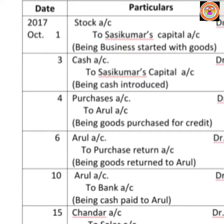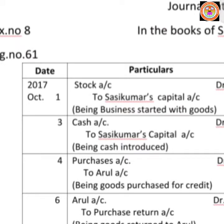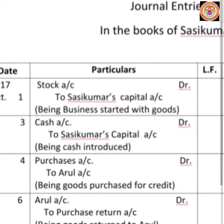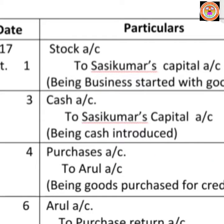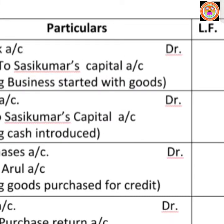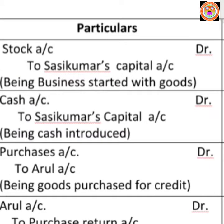Goods come into the business, so you are going to apply the real account rule: debit what comes in, credit what goes out. Here stock comes into the business, so stock account must be debited. Sassi Kumar brings the goods as capital, so here we apply the personal account rule — debit the receiver, credit the giver. Here the giver is Sassi Kumar, so write 'To Sassi Kumar Capital Account.'